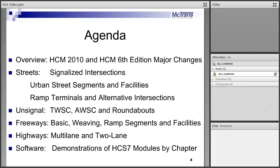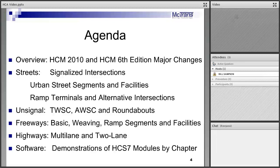Then moving to Urban Streets, where multiple signals are combined into an arterial analysis, and then freeway facilities. Then ramp terminals and alternative intersections — ramp terminals being the two signals that control the ramps to and from a freeway onto the arterial. Alternative intersections include a diverging diamond, restricted crossing U-turn, median U-turn intersection, and a displaced left turn intersection. After each computational chapter, we'll bring up software and show how that chapter is implemented.